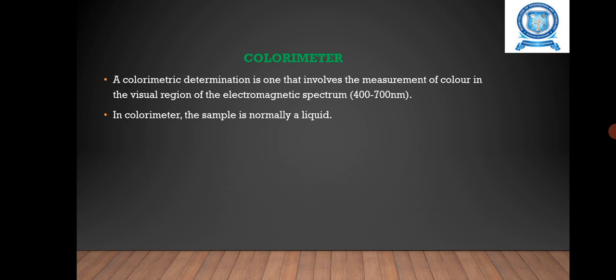Next one is colorimeter. A colorimeter determination is one that involves the measurement of color in the visual region of the electromagnetic spectrum. The sample compartment of a colorimeter is provided with a holder to contain the cavity in which the liquid is examined.